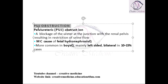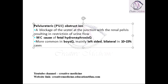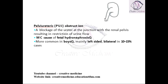In Pelvi-Ureteric Junction Obstruction, this is the kidney, this is the ureter — the junction between the renal pelvis and the ureter. Here there is some blockade, an obstruction called Pelvi-Ureteric Junction Obstruction. Because of this, the urine flow will not occur.